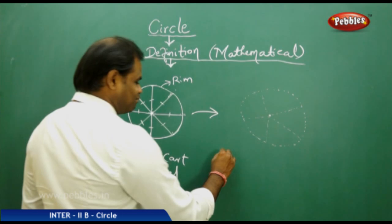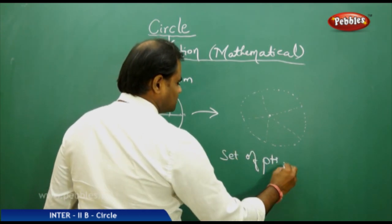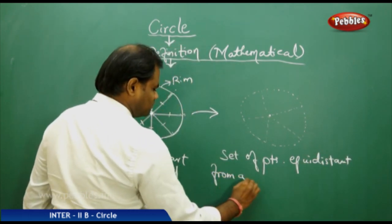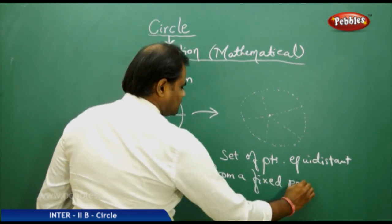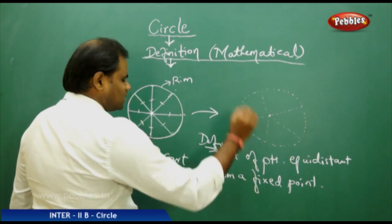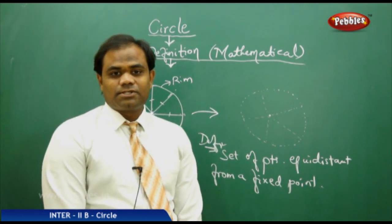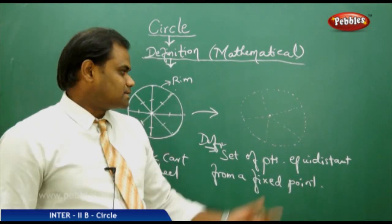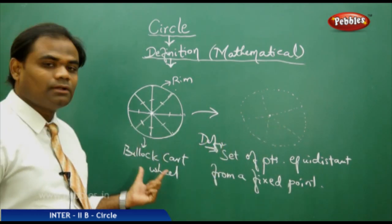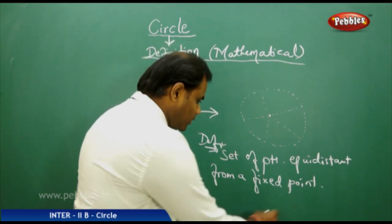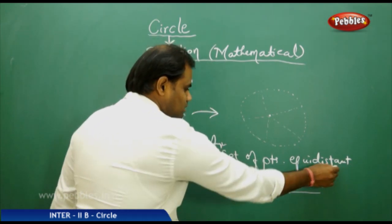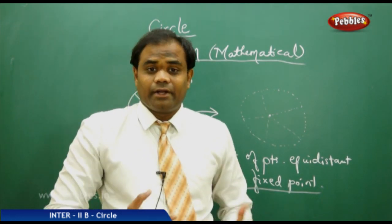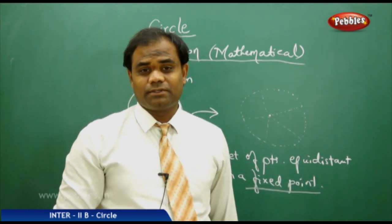Therefore, in the mathematical sense, a circle is defined as the set of points in a plane which are equidistant from a fixed point. This can be seen with the real-life example of a bullock cart wheel. The fixed point is called the center, and the equidistant distance is called the radius — the two important concepts of a circle, both derived from its mathematical definition.